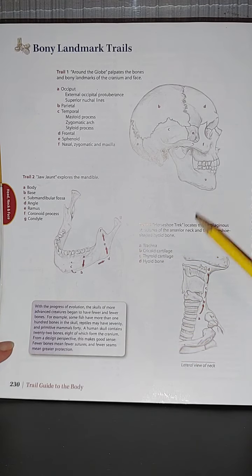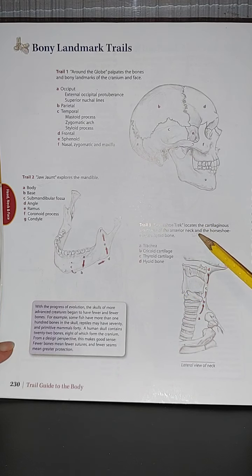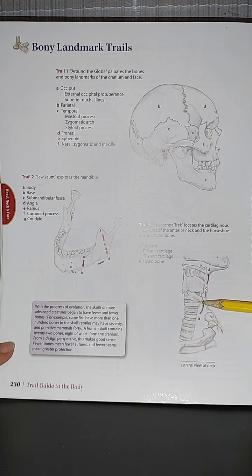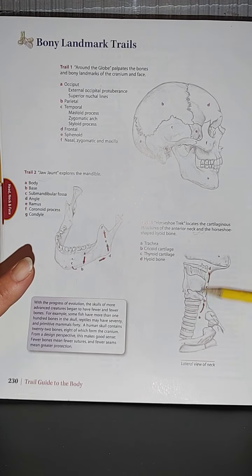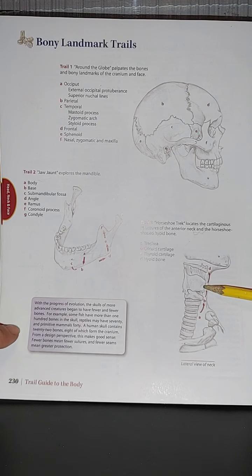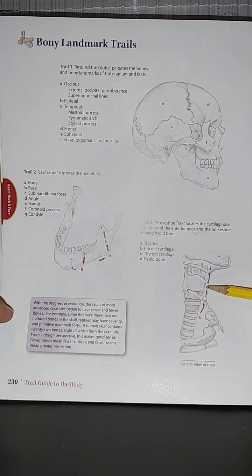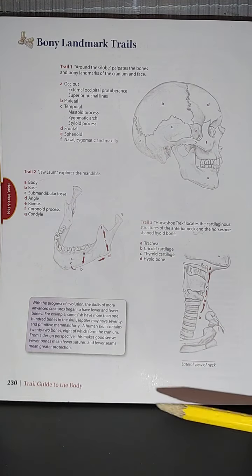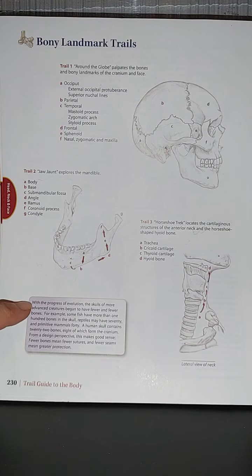Trail three is a lateral view of the neck. The horseshoe track locates the cardinal bony structures of the anterior neck. The horseshoe-shaped hyoid bone is in the anterior neck — anterior meaning the front. We start from the trachea, move superiorly to the cricoid cartilage, then continue superiorly to the thyroid cartilage, and then to the hyoid bone.